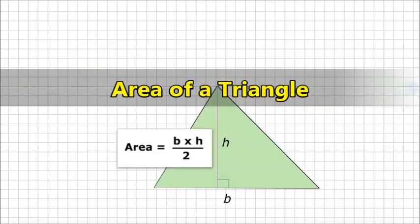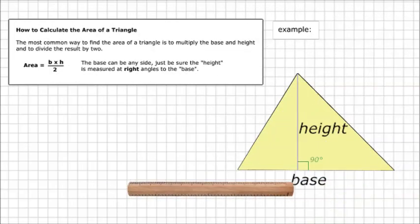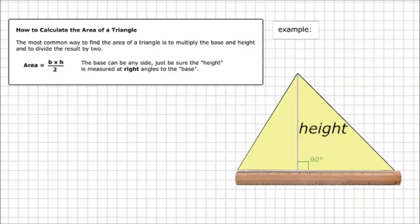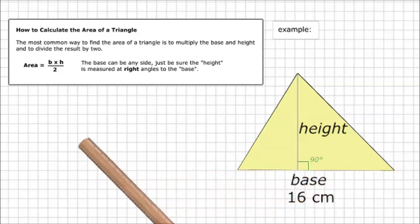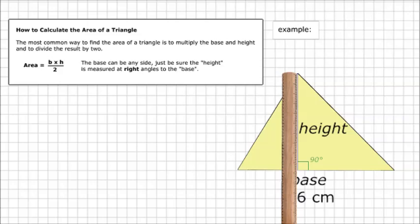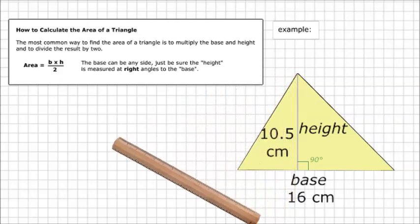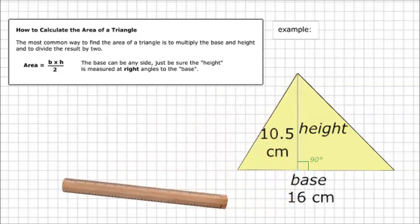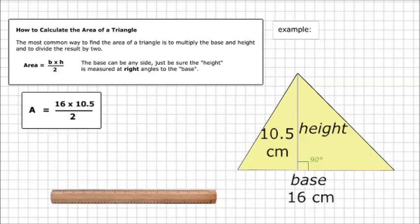Area of a Triangle. The goal is to multiply the base and height and divide the result by 2. The base can be any side — just be sure the height is measured at right angles to the base.